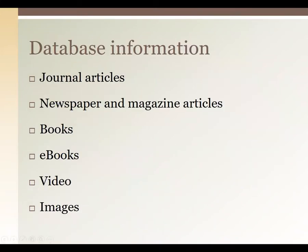The information stored in databases comes in many different types. Journal articles are one of the big ones, and that's what we're focusing on in this class. Other categories include newspaper and magazine articles, books, ebooks, videos, and images. Some databases focus only on one type of information, like just journal articles, but some have a mix of different types — maybe videos, images, and articles.